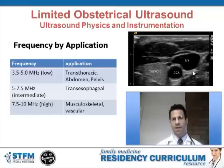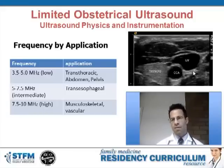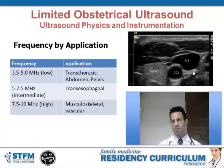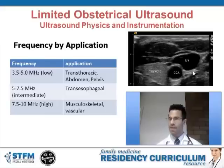Low frequency probes, typically in the range of 2 or 3.5 to 5 megahertz, are used when you need to image deeper, such as for transthoracic, abdominal, and pelvic imaging. Intermediate frequency probes, typically in the range of 5 to 7.5 megahertz, are most commonly used with transesophageal probes for cardiac imaging. Higher frequency probes, specifically 7.5 to 10 megahertz, are used when you don't need to image deep but high resolution is important.